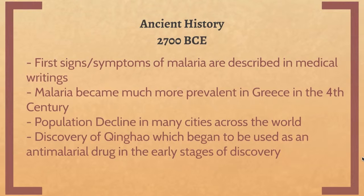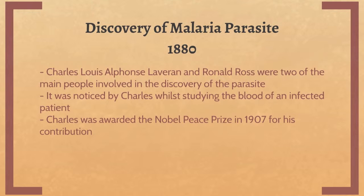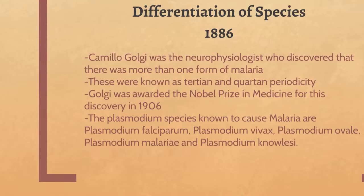The discovery of the King Howe plant was significant in the development of anti-malarial drugs used today alongside quinine treatments. Charles Louis Alphonse Laveran and Ronald Ross were the two main scientists involved in the discovery of the malaria parasite. Charles noticed the malaria parasite while studying the blood of an infected patient.